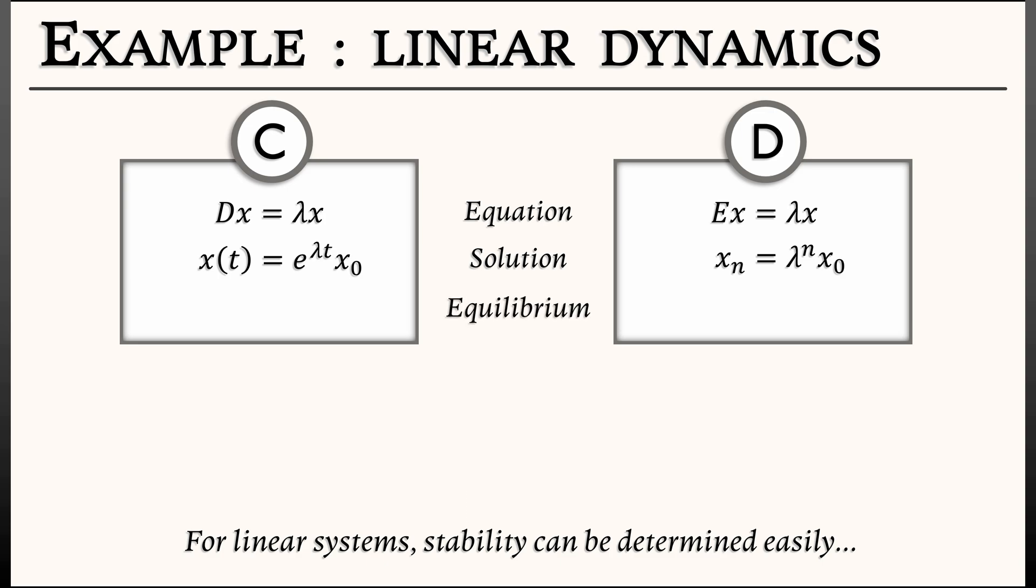Now, where are the equilibria in these systems? Well, in continuous time, setting the right-hand side equal to zero, the only solution is x equals zero, assuming that lambda is not zero. Whereas in discrete time, the only solution to Ex equals lambda x equals x is, again, x equals zero, assuming that lambda is not equal to one.